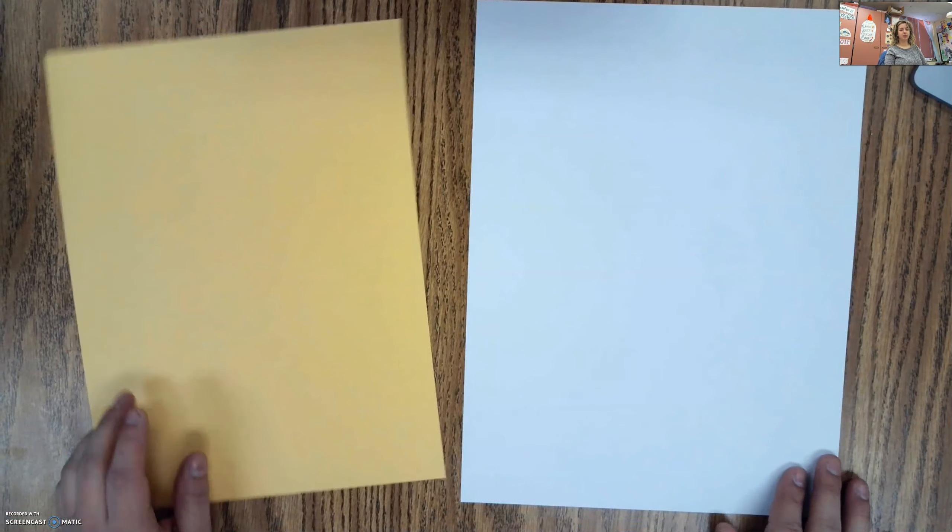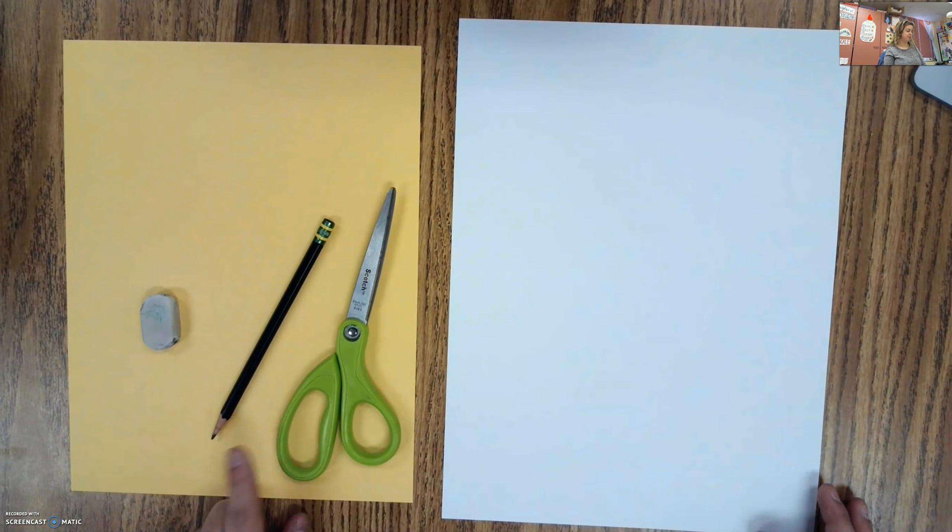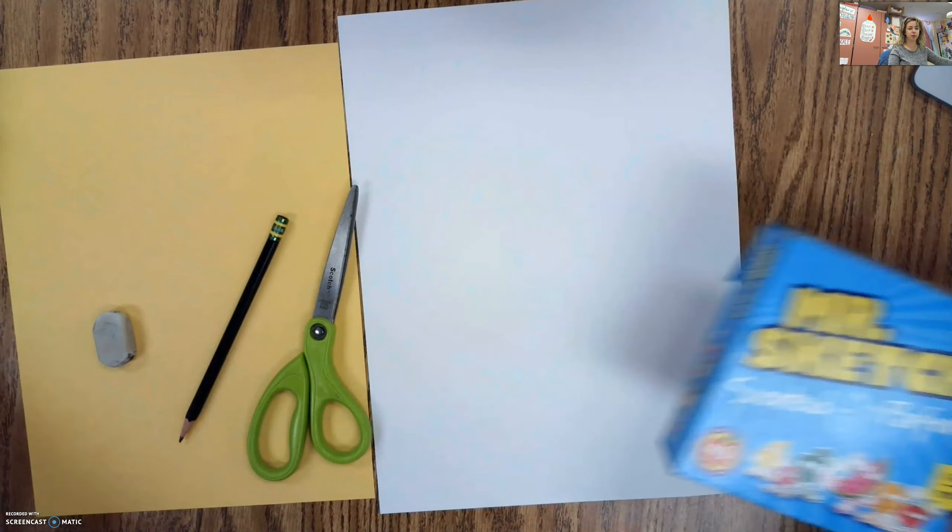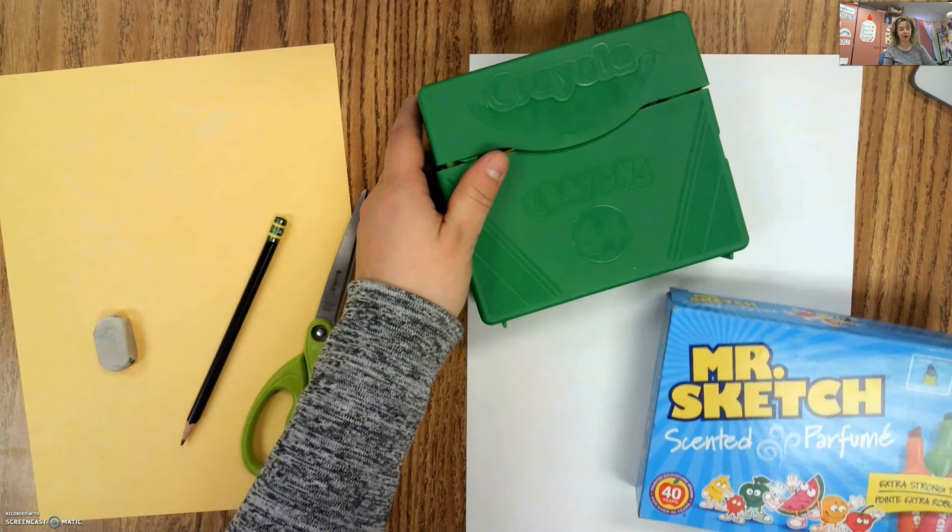So for this project, you want a white piece of paper and a colored piece of paper, a pencil and an eraser, definitely our art tool basics. You want some scissors because we're going to be cutting out of this. And then you want something to color in with. I'm going to try with both markers and crayons, but you can use whatever you have to color in.